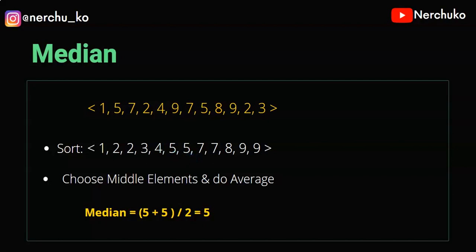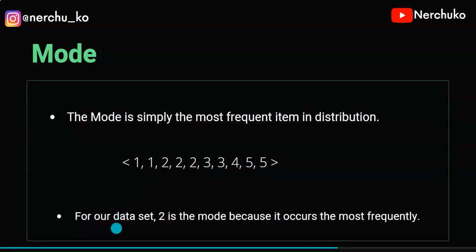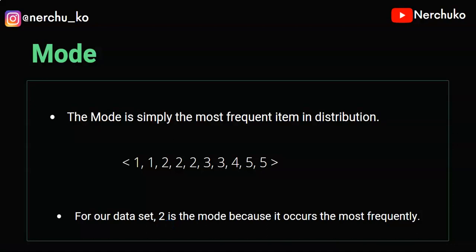Next, the central tendency measure is Mode. The Mode is the most frequent item in the distribution. So this is my distribution: 1, 1, 2, 2, 3, 3, 4, 5, 5. Here I have 2, found three times. So we can have 2 modes or 3 modes. I will show you how to identify the mode in a dataset.